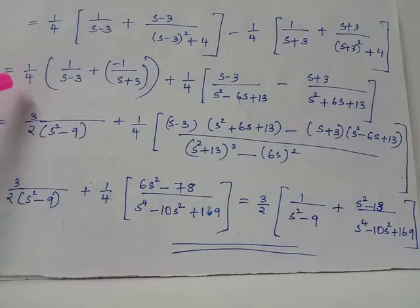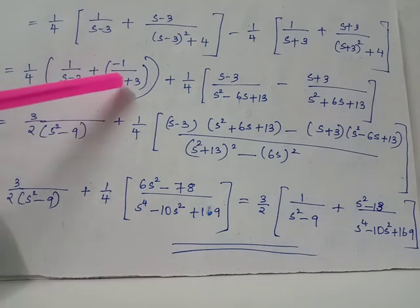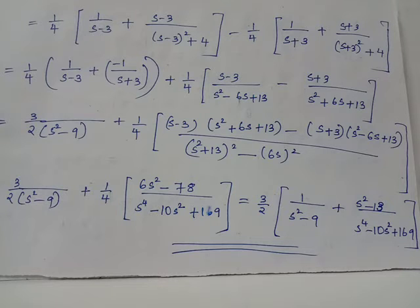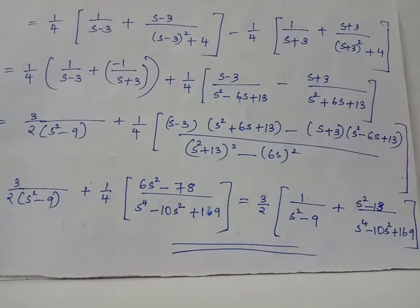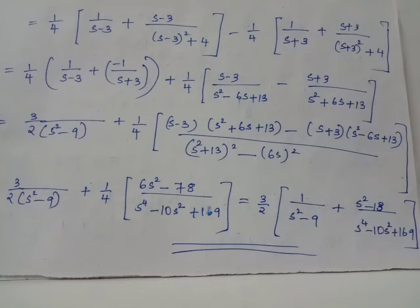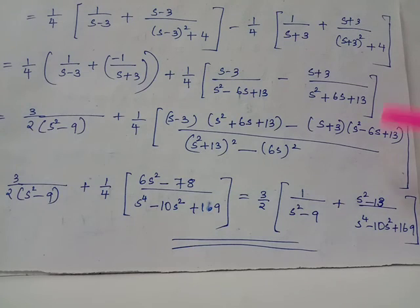When we have 6/4, after cancelling the common factor 2 we obtain 3/2. In the denominator, taking LCM gives (s−3)(s+3) which equals s²−9, since (a+b)(a−b) = a²−b². Similarly, for the second grouped terms, taking LCM gives factors of the form (a+b)(a−b), where a = s²+13 and b = 6s. After simplification, the final answer is: (3/2)·(1/(s²−9)) + (s²−13)/(s⁴ − 10s² + 169).